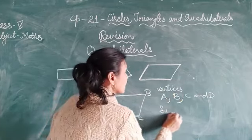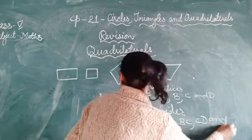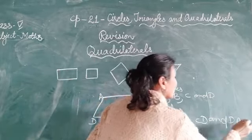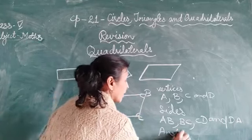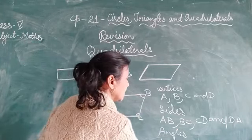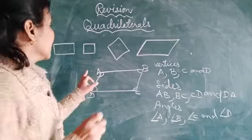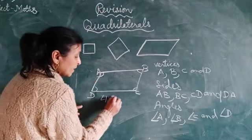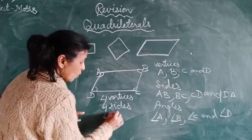Now, four sides. The sides are AB, BC, CD and DA. These are the four sides. Now four angles: angle A, angle B, angle C and angle D. These are all about the quadrilateral. A quadrilateral has four vertices, four sides and four angles.